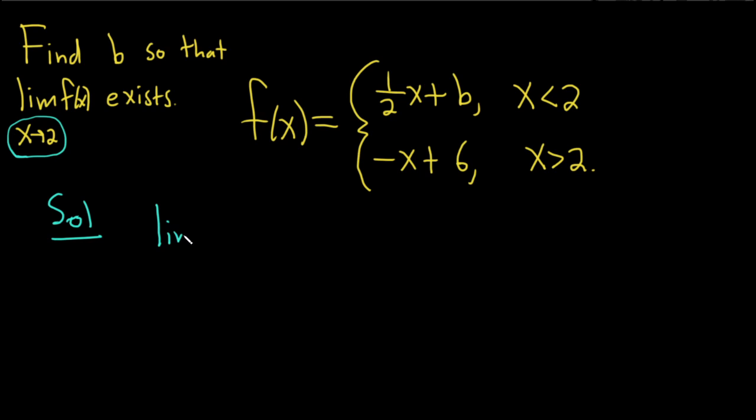So we'll start by taking the limit as x approaches 2 from the left of f of x. So because we're approaching 2 from the left, x is less than 2.